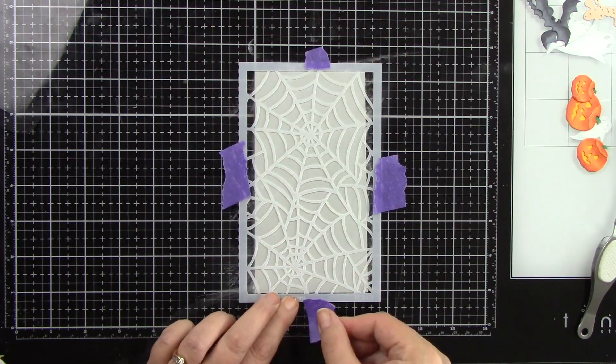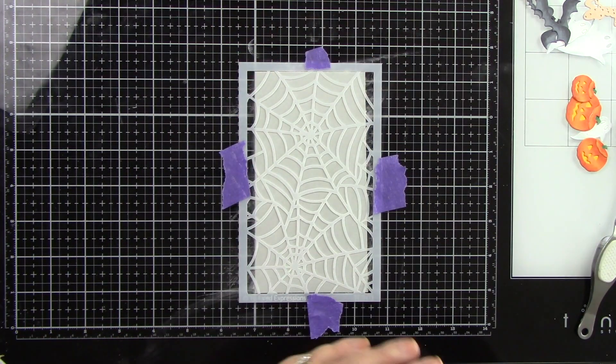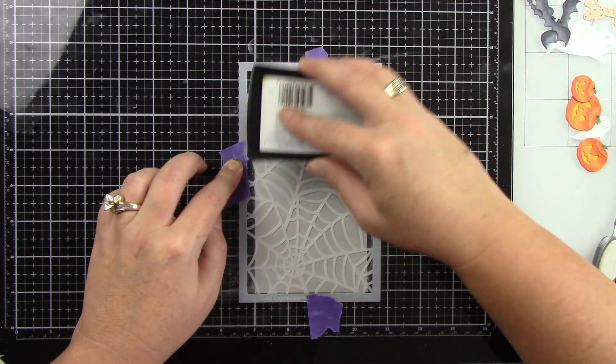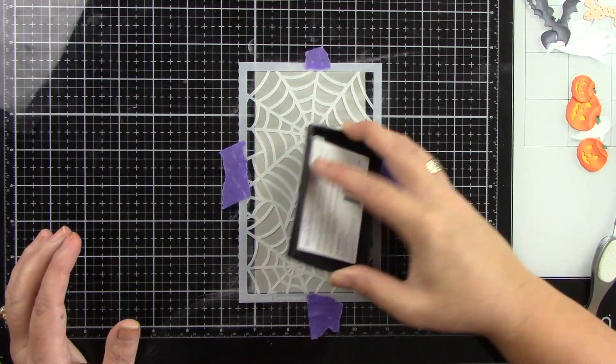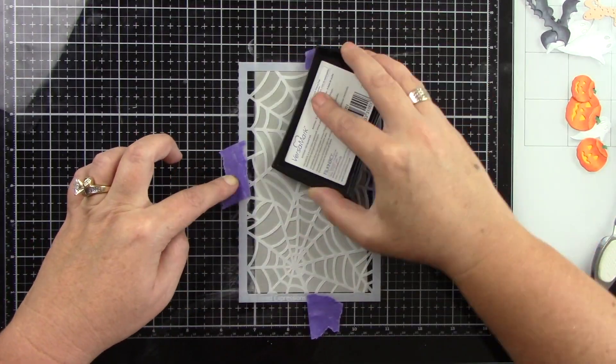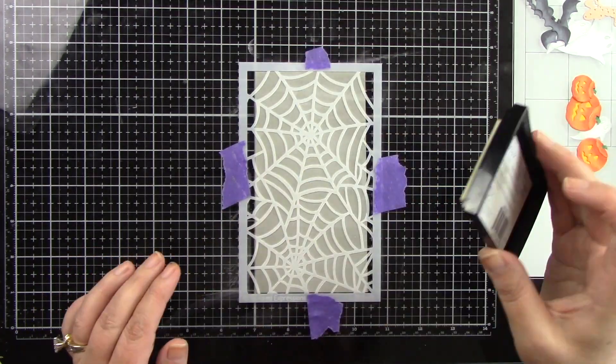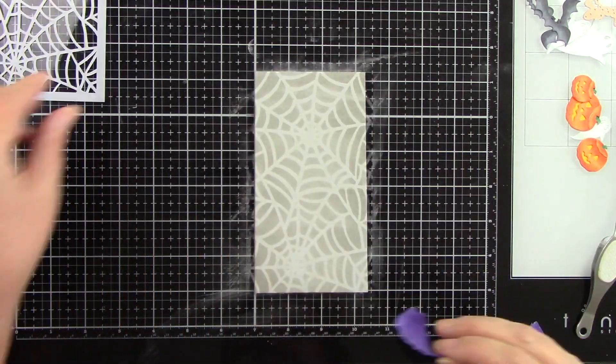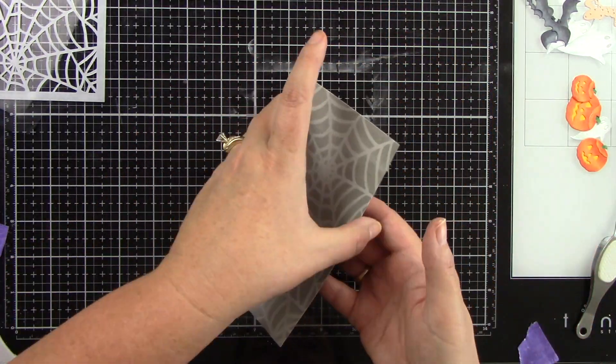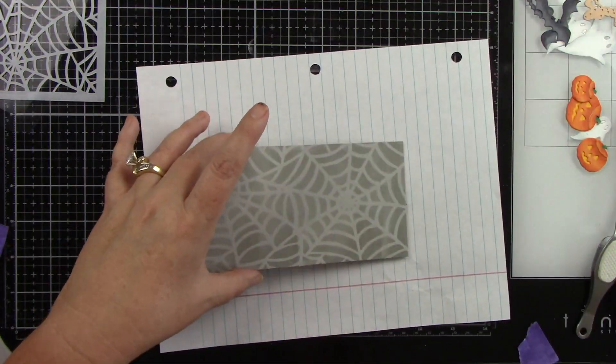I have the Taylor Expressions spiderweb stencil taped down over my mini slim card panel. I'm using Versamark ink, and just inking this up really good. I want to make sure I get in all those little openings of this spiderweb stencil. So make sure your ink pad is nice and juicy. So now that you can see that that is all inked up, I'm going to use some black embossing powder.